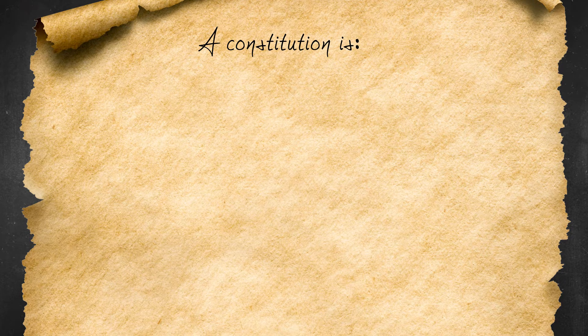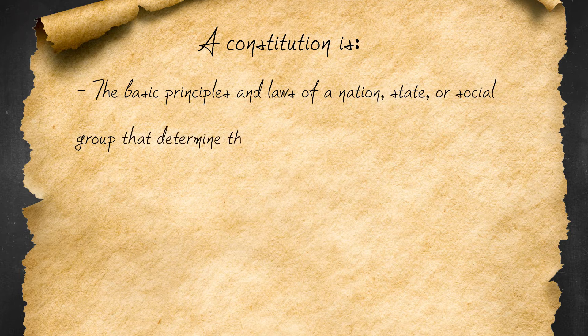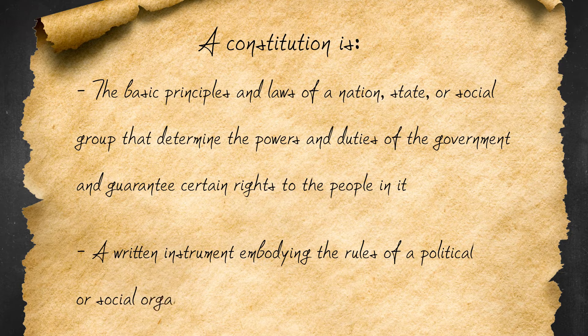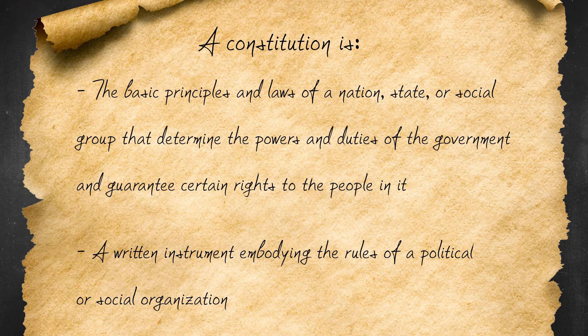Grab your pens and paper. A constitution is the basic principles and laws of a nation, state, or social group that determine the powers and duties of the government and guarantee certain rights to the people in it — a written instrument embodying the rules of a political or social organization. Pause the video and write this definition in your notebook, because we are going to use it to figure out what a constitutional government is in terms of its principles and how it relates to us.